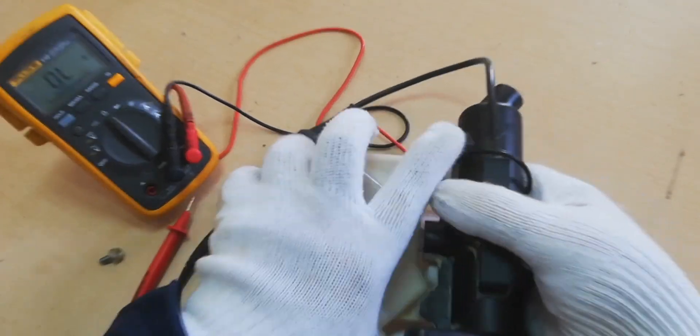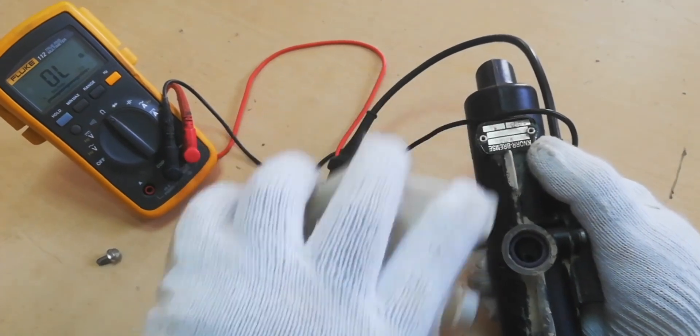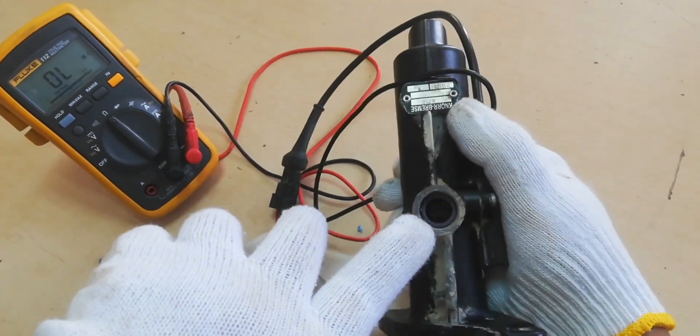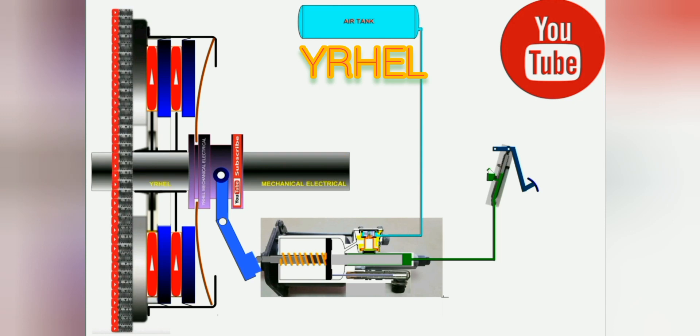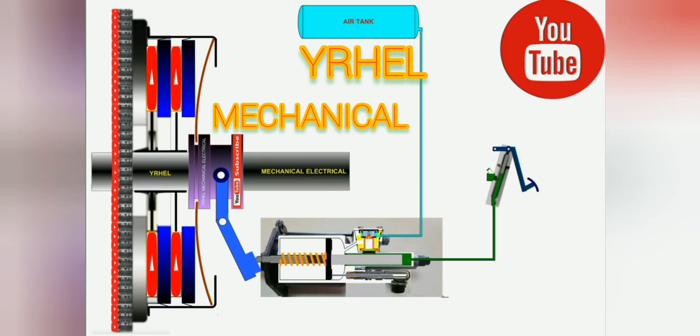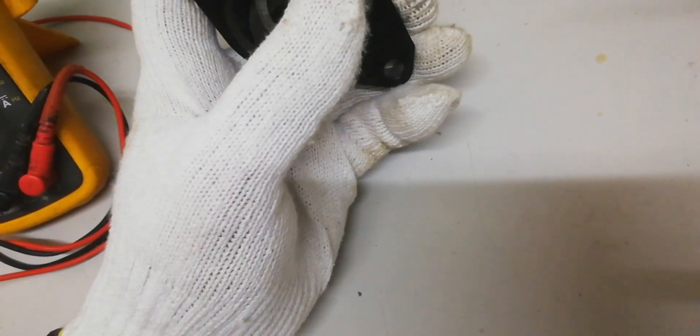This video is to show some troubles of clutch master cylinder and clutch master cylinder how it works. This is a defective clutch master cylinder.